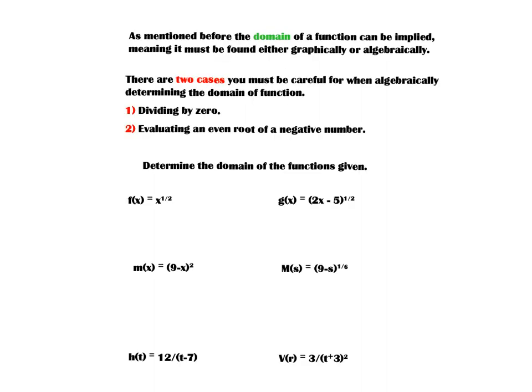As mentioned in part one, the domain of a function can be implied or explicitly defined, meaning we must find it either graphically or algebraically. Today we're going to algebraically do this process. There are two cases to be careful about when determining the domain algebraically: am I dividing at some point by zero, and am I evaluating an even root of a negative number.